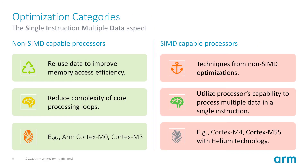Staying on library optimizations for Cortex-M processors, there are two kinds of optimizations targeted by CMSIS NN. On the left, you have processors that do not have SIMD capability, and on the right, you have SIMD-capable processors.